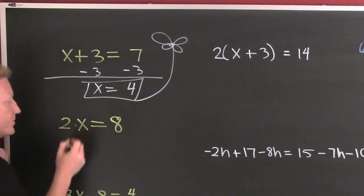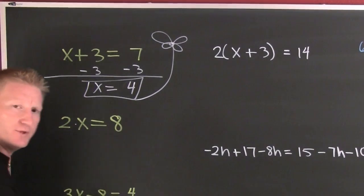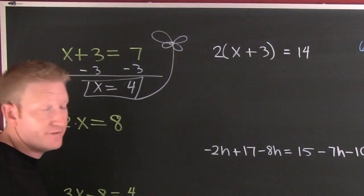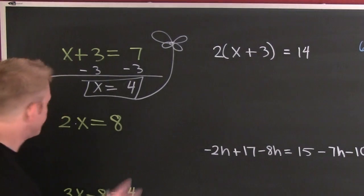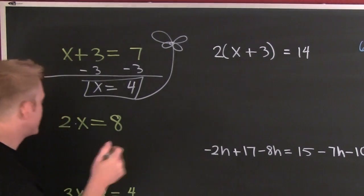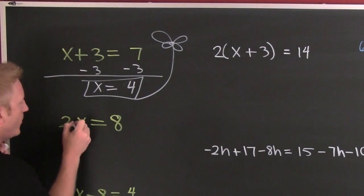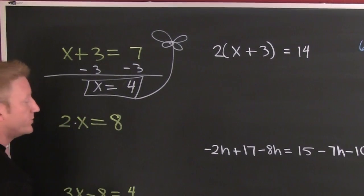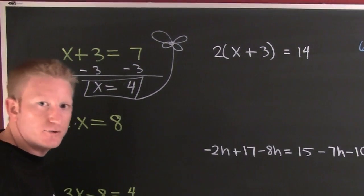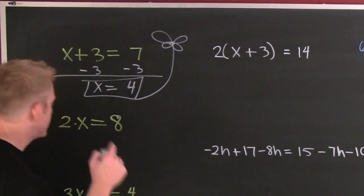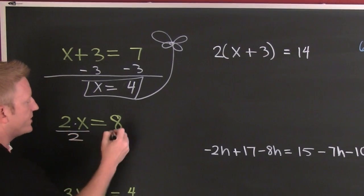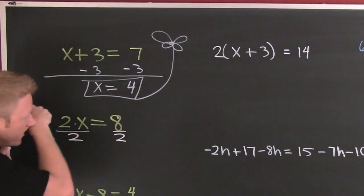Now I have multiplication. What's the inverse operation of multiplication? Division — the multiplicative inverse. It's the first of your golden rules: what you do to one side you must also do to the other. So if I'm gonna undo this multiplication, I'm gonna use division. I'm gonna divide both sides by two.